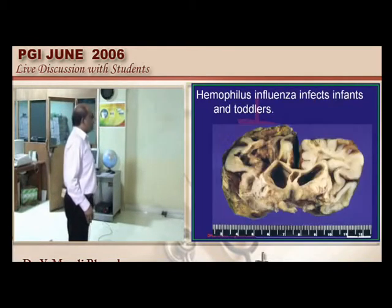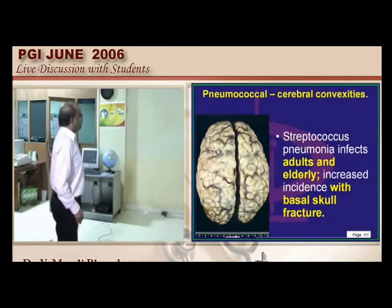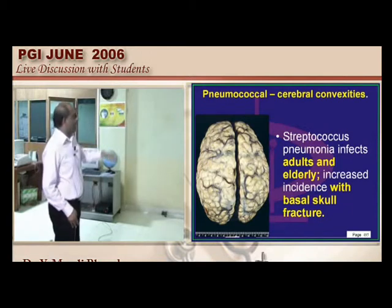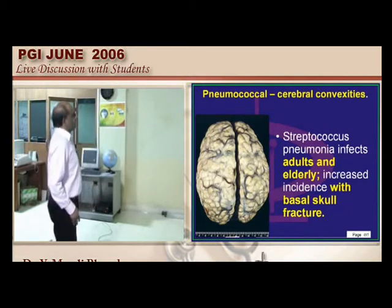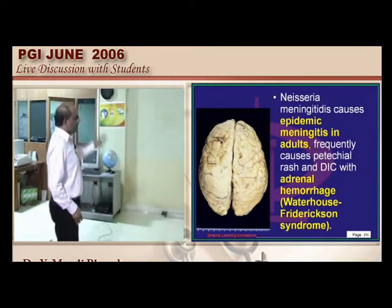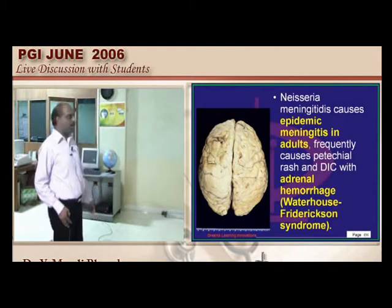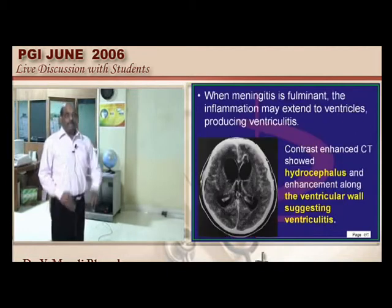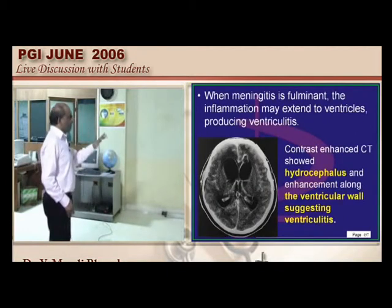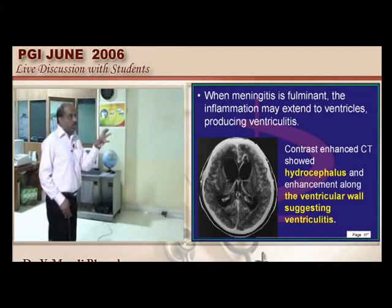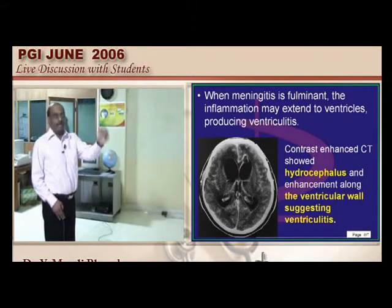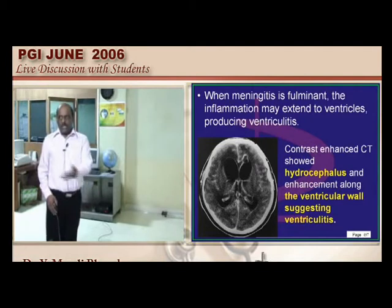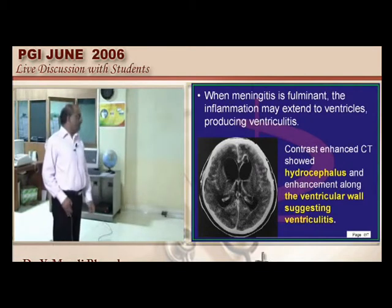Neisseria meningitidis can be epidemic and cause adrenal hemorrhage called Waterhouse-Friderichsen syndrome. Fulminant meningitis can spread into the ventricles, producing ventriculitis and ventricular enlargement with hydrocephalus visible on CT.